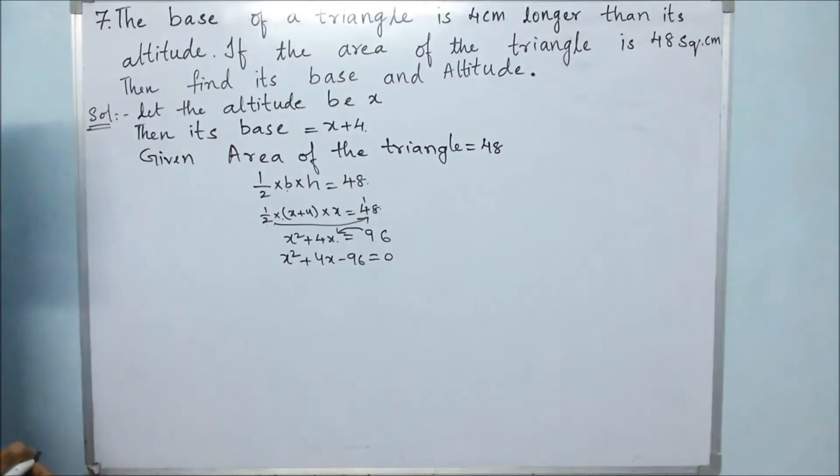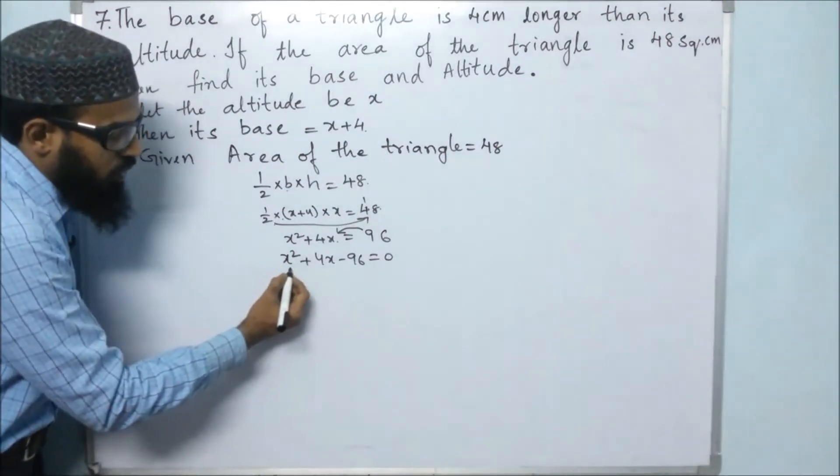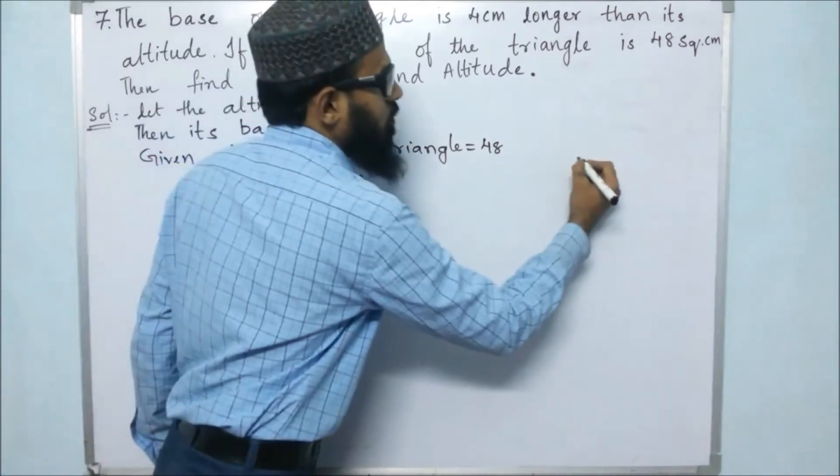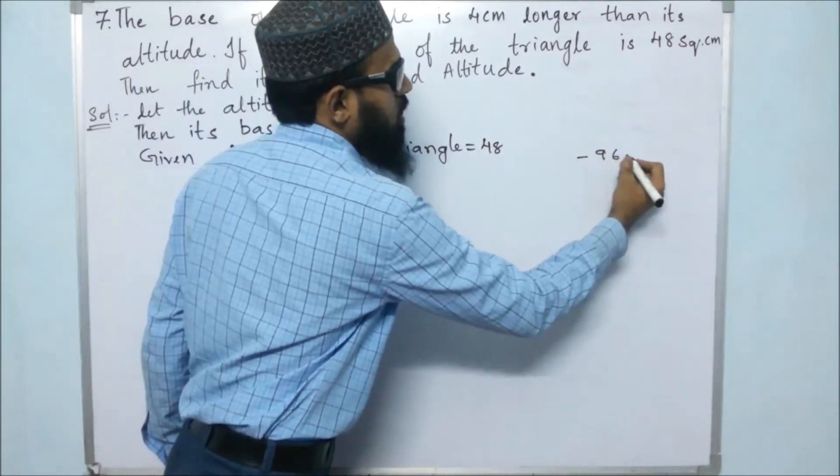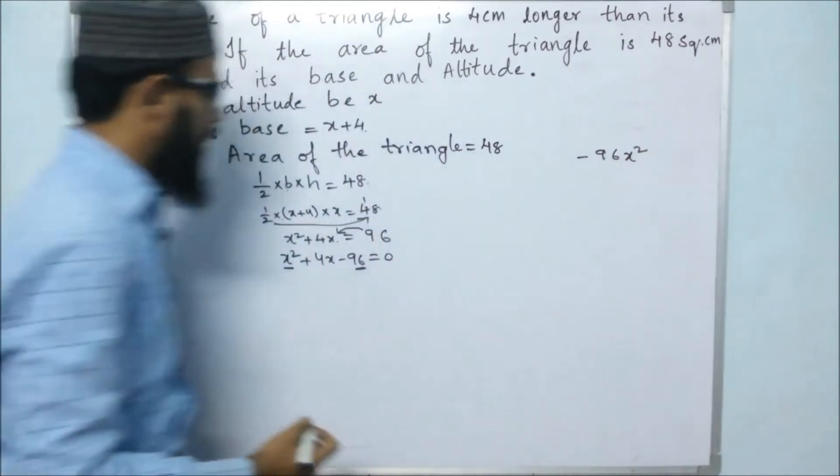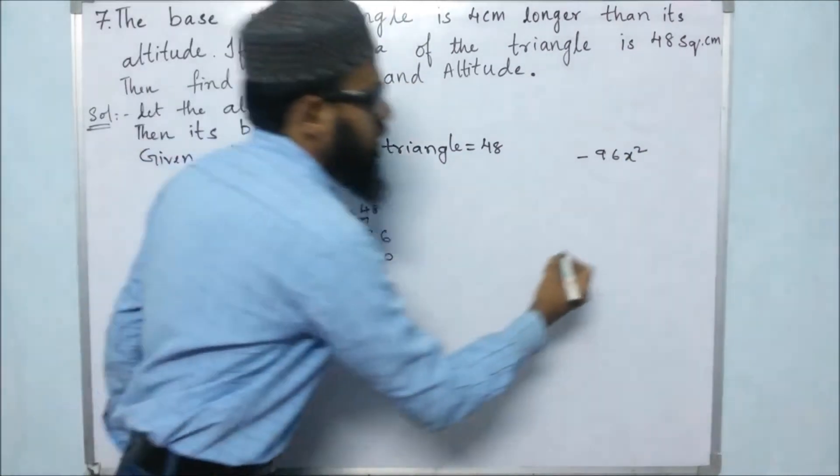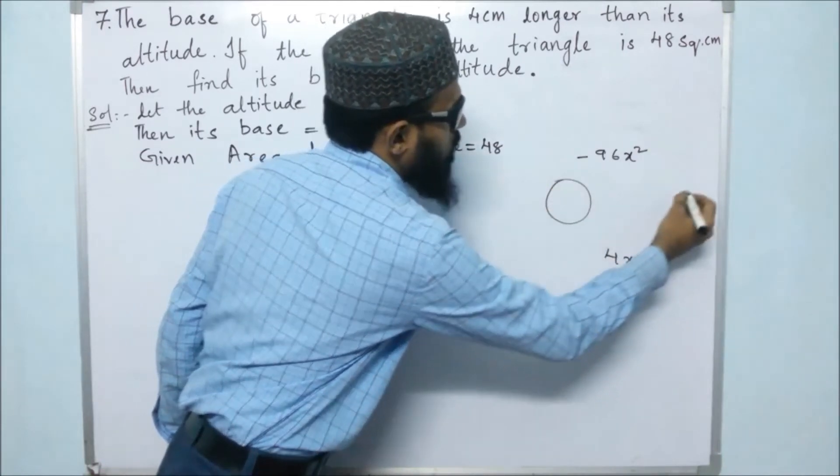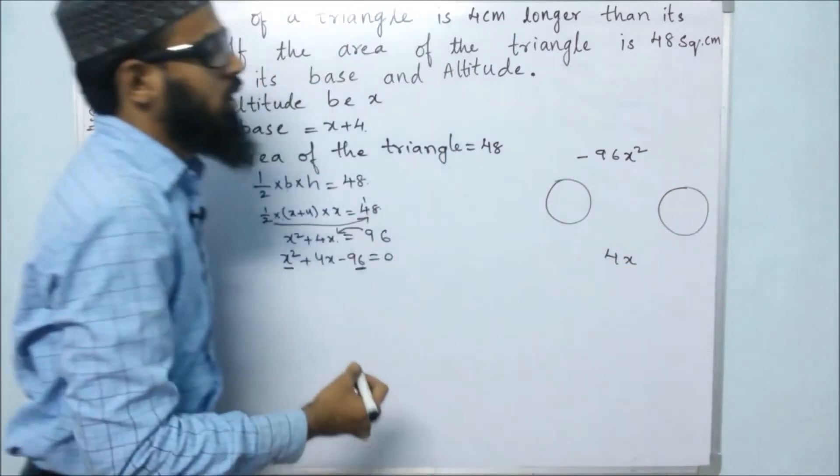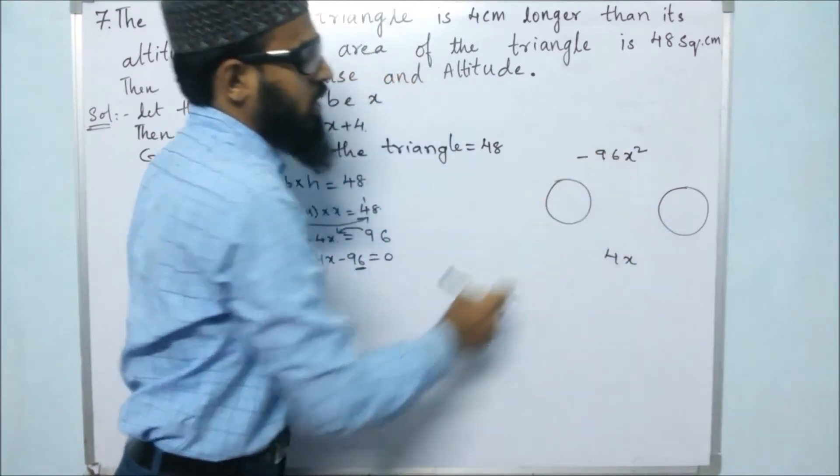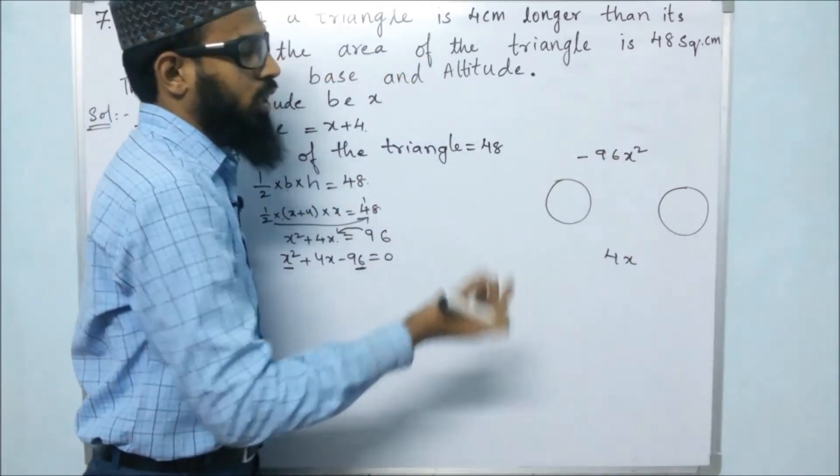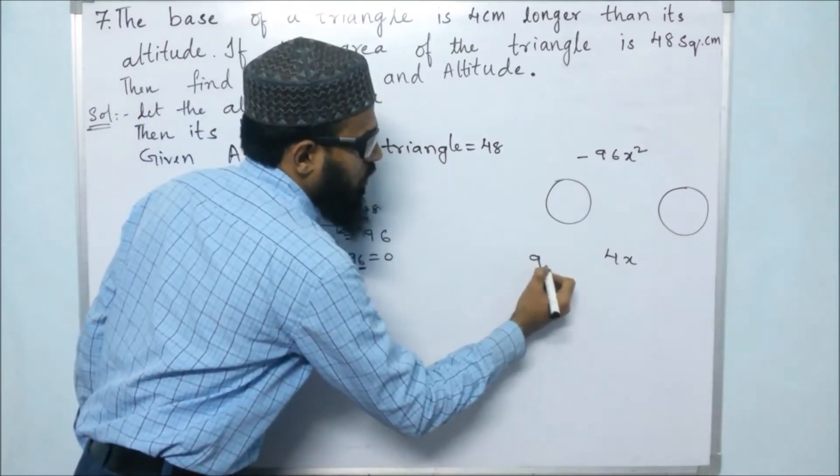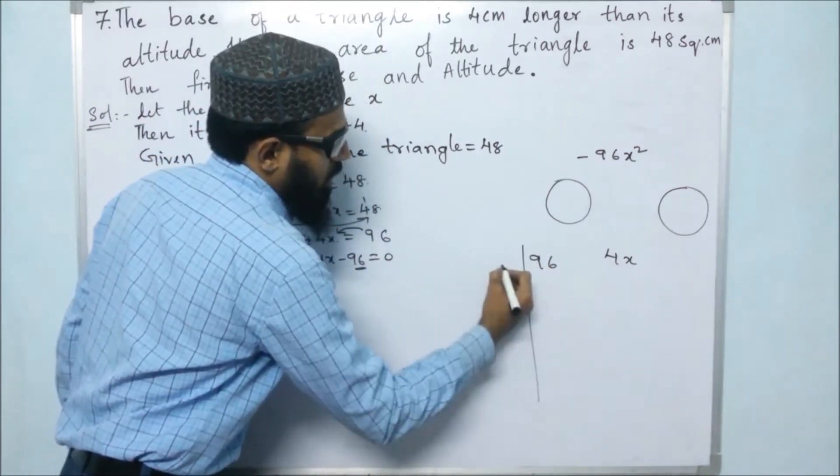This is a quadratic equation. For solving this, we will multiply first and the last term. We will get minus 96x square, and the middle term is 4x. Now we need the 2 terms in such a way that if we multiply them, we should get 96. So for finding those 2 terms, we will take out the factors.